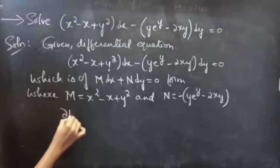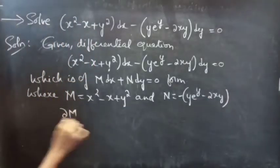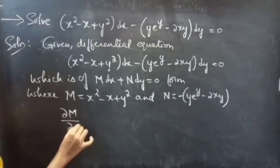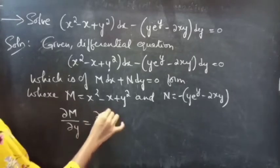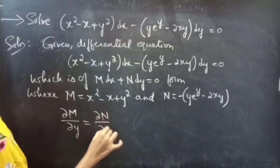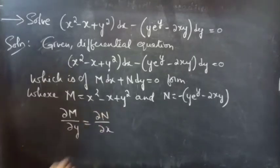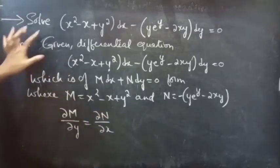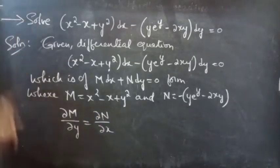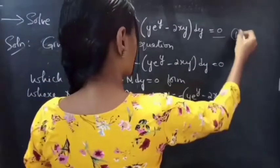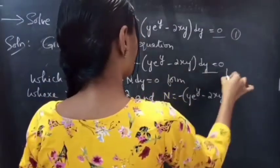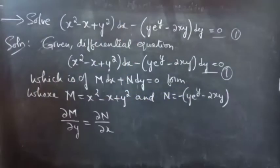If the partial derivative of M with respect to y is equal to the partial derivative of N with respect to x, then we can say that the given differential equation is an exact equation. Let the given differential equation be equation 1.